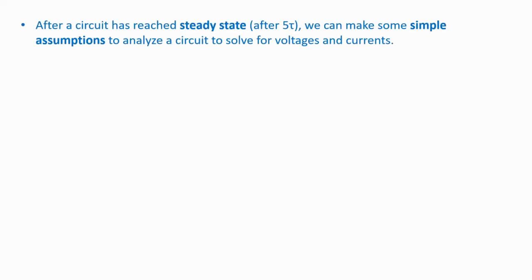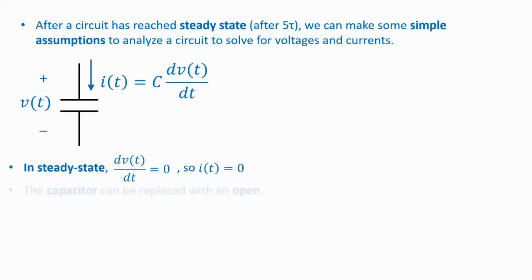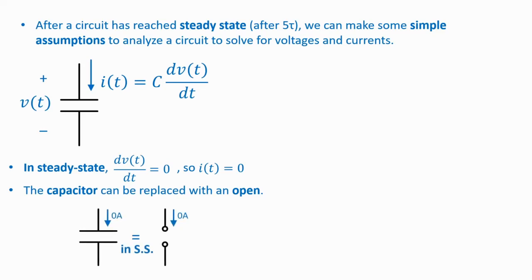Oftentimes it's useful to determine the values of voltages and currents in steady state. After a circuit has reached steady state, we can make some simple assumptions to analyze the circuit and solve for voltages and currents. Remember that a capacitor's current is C dv/dt. In steady state, the voltage is constant, so the derivative dv/dt is zero. This means that the current I is also zero. Because I is zero, the capacitor can be replaced with an open circuit for the purposes of analysis in steady state — in DC steady state, the capacitor behaves just like an open.